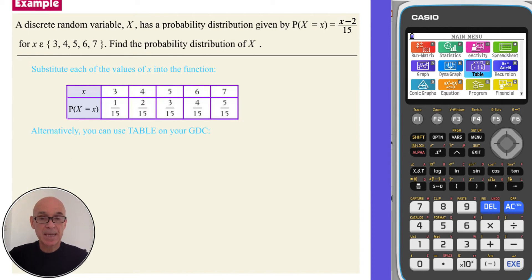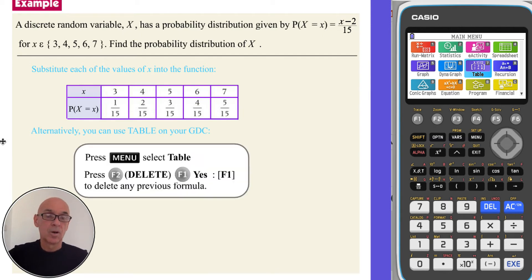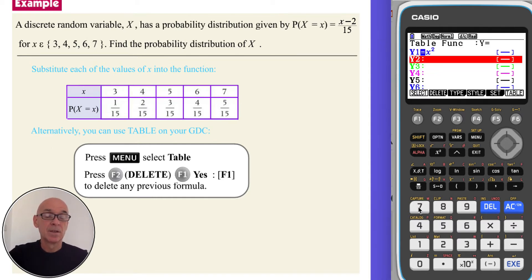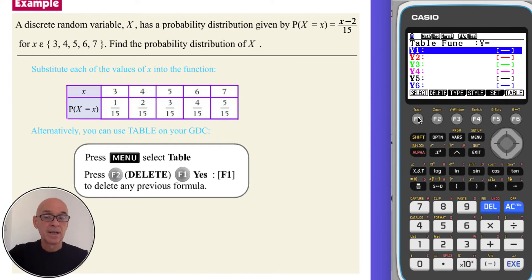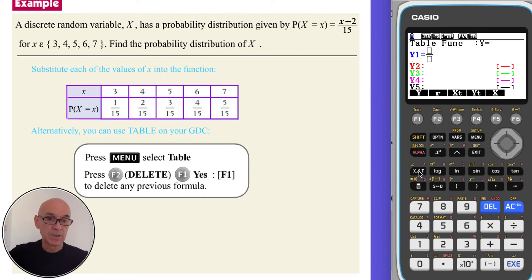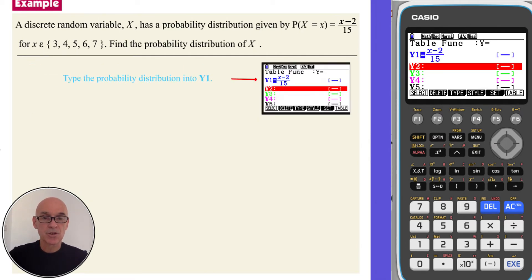We can actually make use of the table function on your calculator to do those calculations. So I'll just show you how we can do that. On your calculator, having pressed menu, if you pick the table option, that's option 7, and then delete any function that's already in there by pressing F2, delete, and F1 to confirm. And then type in the given function. So that's how I'll press the fraction button, since it's a fraction, put in X, take away 2, the cursor down, and into the 15th.